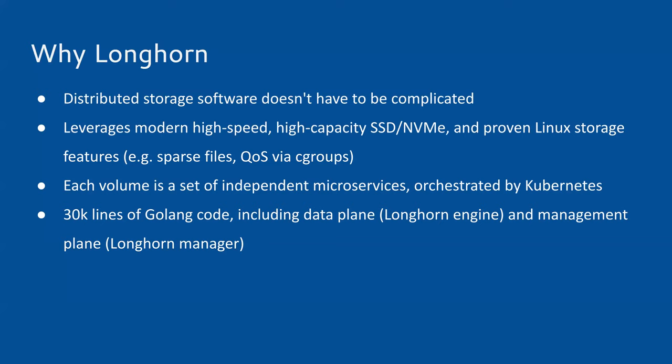In Longhorn's model, each volume is just a set of independent microservices, orchestrated by Kubernetes. Longhorn's management plane — the Longhorn Manager — runs entirely on top of Kubernetes. It follows the Kubernetes controller model with a bunch of controllers to orchestrate the flows of creating, deleting, and operating Longhorn volumes. Currently most code is written in Go — about 30,000 lines excluding tests — including both the data plane (Longhorn Engine) and management plane (Longhorn Manager).